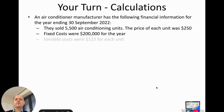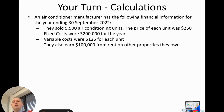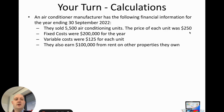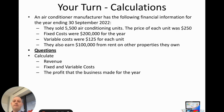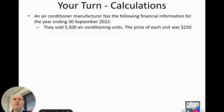Let's look at an example. An air conditioning manufacturer provides the following financial information for 30th September 2022: they sold 5,500 units at a price of $250, had fixed costs of $200,000, variable costs of $125 per unit, and also earned $100,000 from rent on other properties they own. The task is to calculate revenue, fixed and variable costs, and profit.